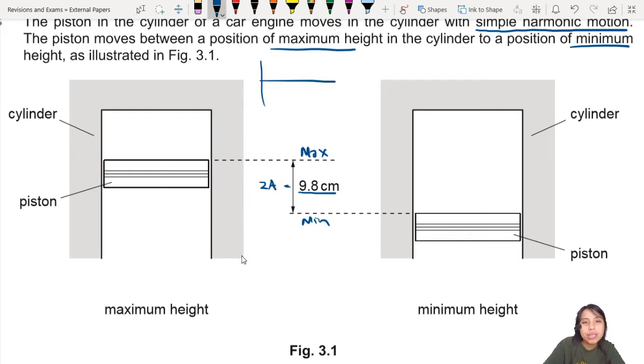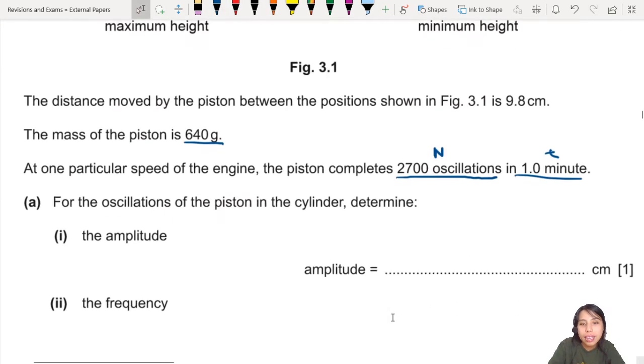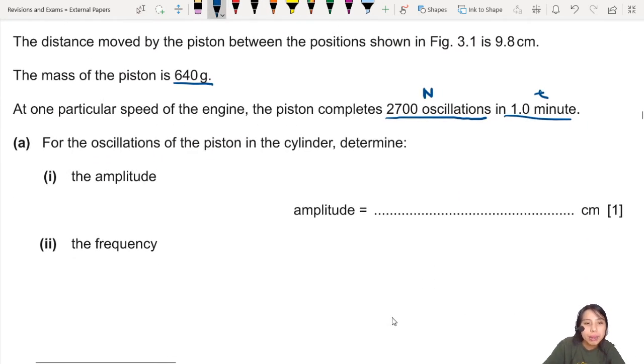You remember this? If you have an equilibrium position and you're oscillating in time, you will have something like this. And you are saying top to bottom is 9.8 cm, so amplitude is half. Amplitude will be 9.8 cm divided by 2, so the answer will be 4.9 cm. This is one mark.